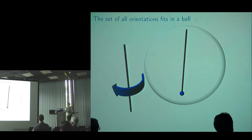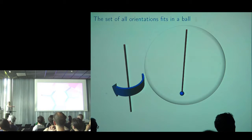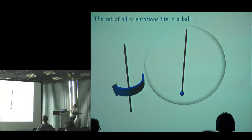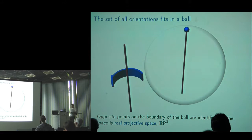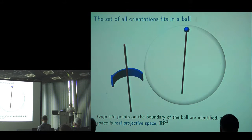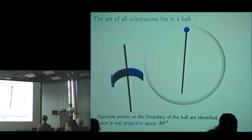Rotating by 180 degrees in one direction and 180 degrees in the other direction both end up in the same orientation. So opposite points on the boundary of the ball must be identified. Gluing opposite points on the boundary of the three-dimensional ball gives us the real projective space RP3. Once you believe you can get from any orientation to any other by choosing an axis and rotating by some angle, the space of possible orientations is RP3.